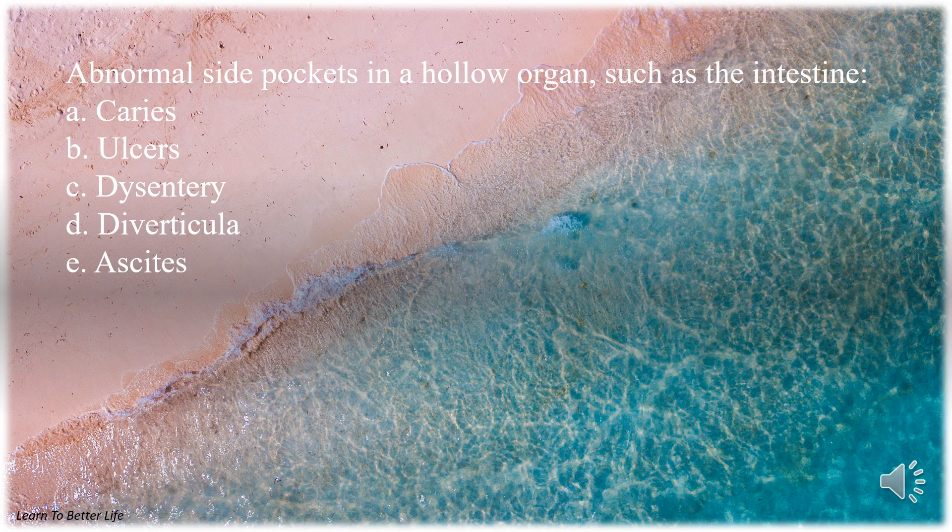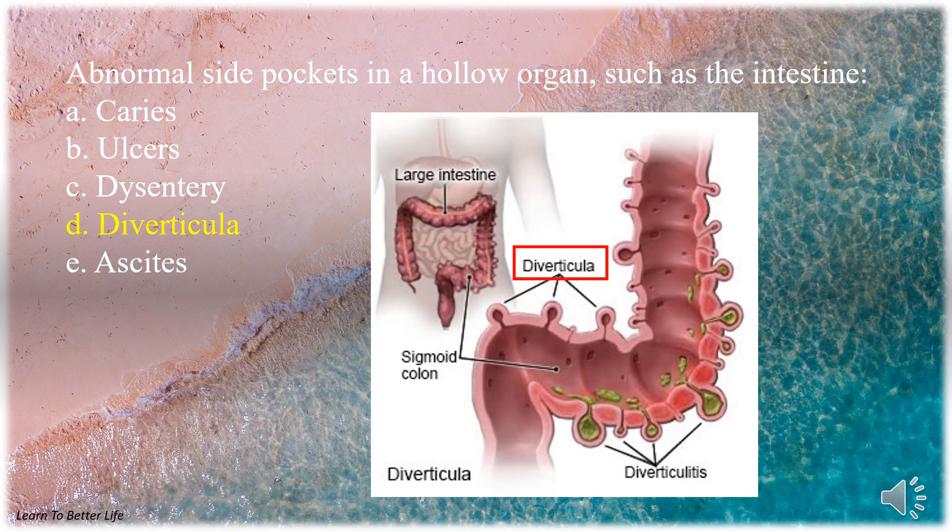Abnormal side pockets in a hollow organ, such as the intestine. A. Caries. B. Ulcers. C. Dysentery. D. Diverticula. E. Ascites. The answer is D. Diverticula.